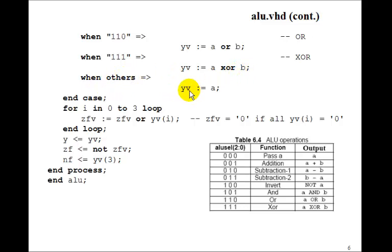When others, in our case statement, we'll just set it equal to A. That's the end of the case statement. Now, to get the zero flag, we want the zero flag to be set to 1 when all the bits are 0. We had initially set this Z flag variable to 0. So if we OR it, we put a for loop, go through all 4 bits for i in 0 to 3 loop, and we OR it with Y variable sub i.